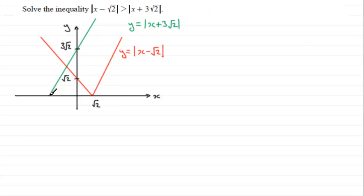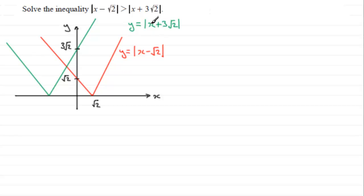At the x-axis, because of the mod sign the values are now going to be positive, so we get a reflection in the x-axis. This line should be parallel to the first one so they're never going to intersect. This point where y is 0 would be where x equals minus 3 root 2, so we'll mark that in as minus 3 root 2.